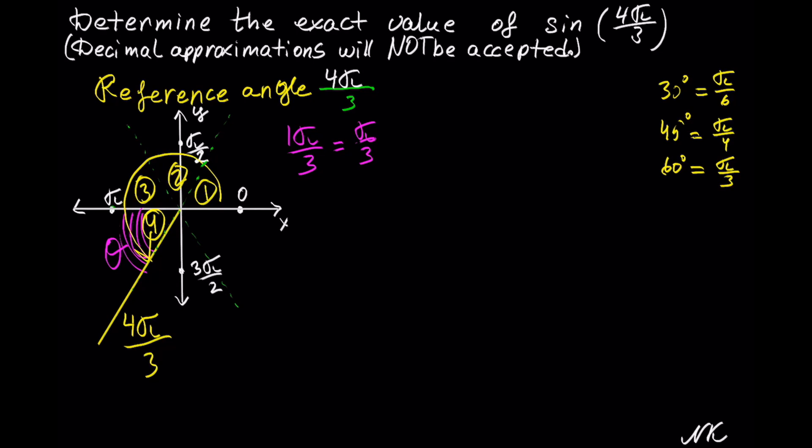If you are not comfortable with radians, you can absolutely change 4π/3 into degrees, find the reference angle, solve the problem, and convert the answer into radians on the last step. So the reference angle for 4π/3 is just π/3.